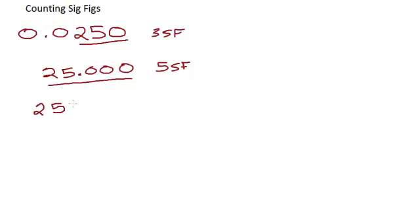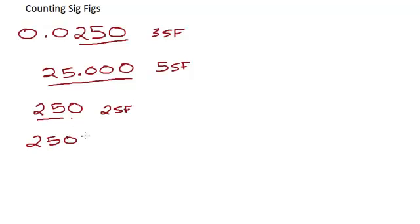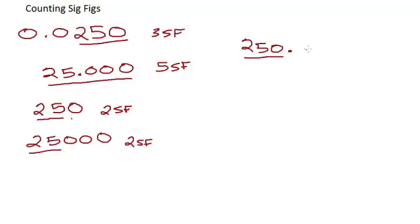If instead I write the number 250 without a decimal, the last zero has to be written — I can't leave it off and still have the same value — but because there is no decimal at the end, I don't count it as significant. It's a placeholder. The 2 and the 5 are significant, so there are only two sig figs in 250. Similarly, 25,000 without a decimal has only two sig figs — the zeros are placeholders, not part of the measurement. However, if I write 250 with a decimal point at the end, that notation indicates all three digits are significant figures, giving three sig figs.